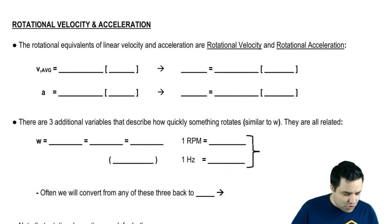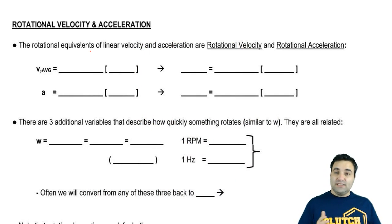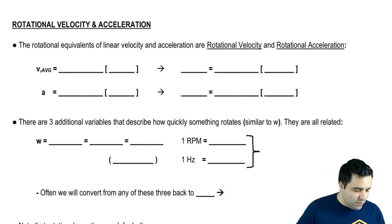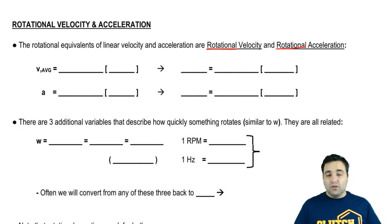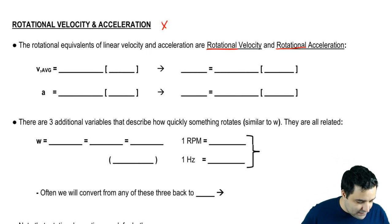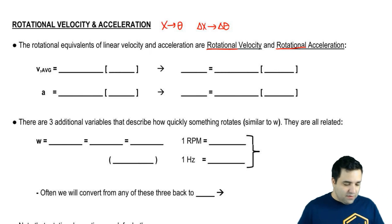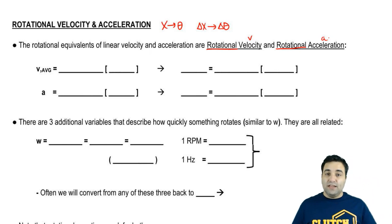The rotational equivalents of linear velocity and linear acceleration are rotational velocity and rotational acceleration, or angular velocity and angular acceleration. Similar to how x becomes theta and delta x becomes delta theta in rotation, v and a will take different letters as well.